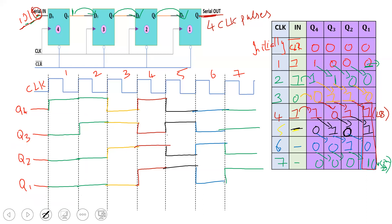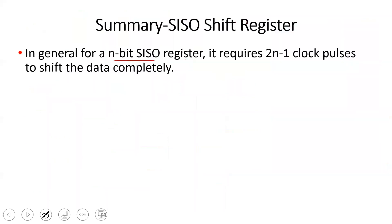So we inputted the data 1 0 1 1, and it took 7 clock pulses to transfer the 4-bit data completely. In general, for an n-bit SISO register, it requires 2n minus 1 clock pulses to shift the data completely. For a 4-bit register: 2 times 4 minus 1 equals 8 minus 1, which is 7 clock pulses, as we can see.